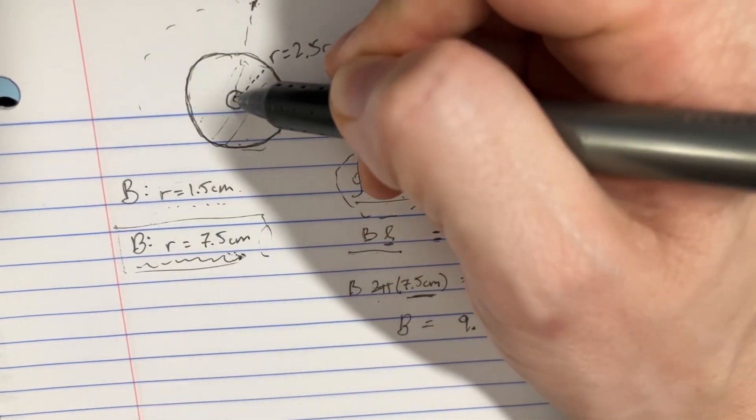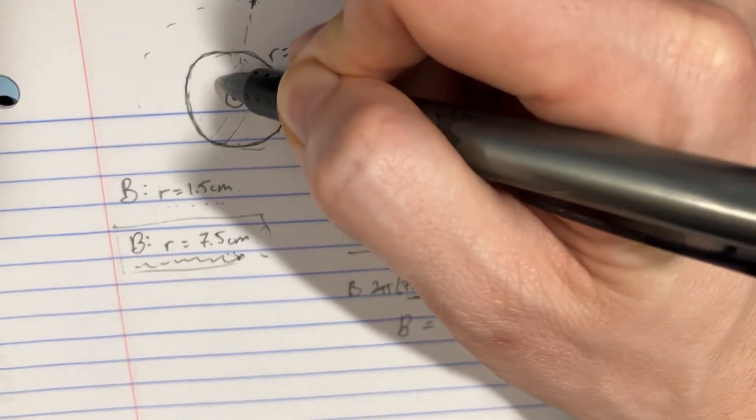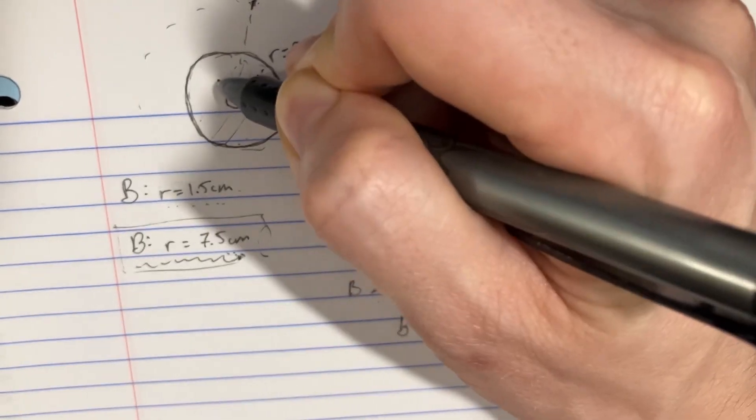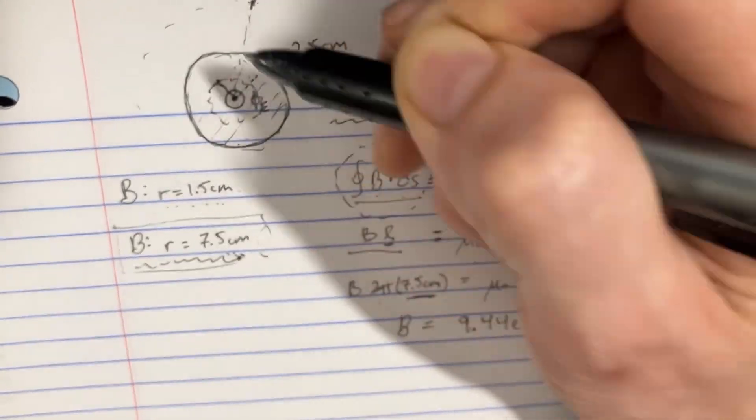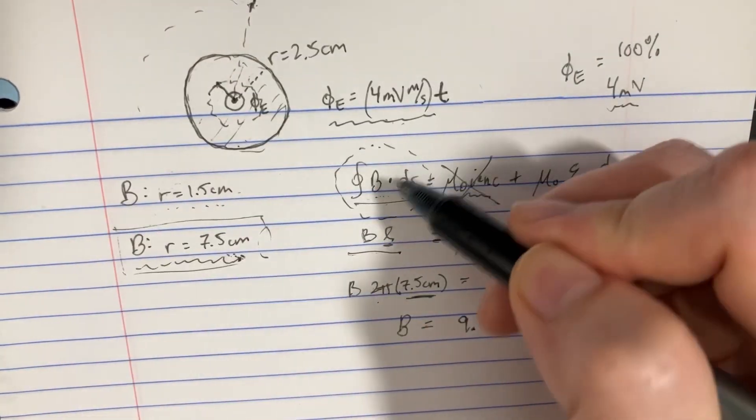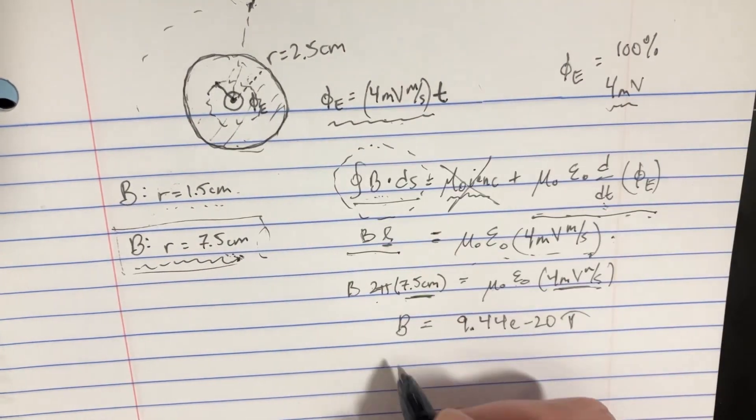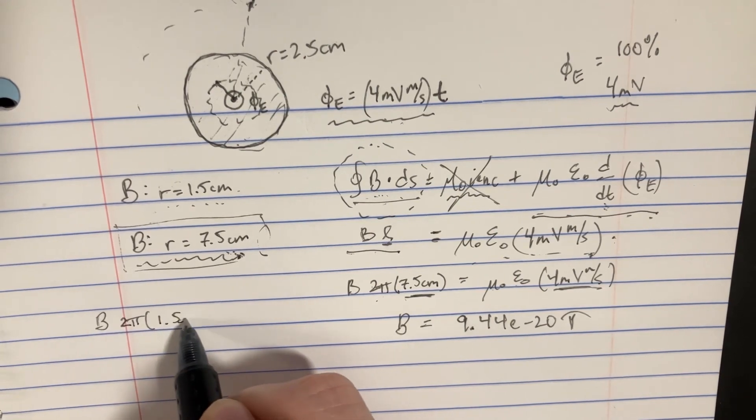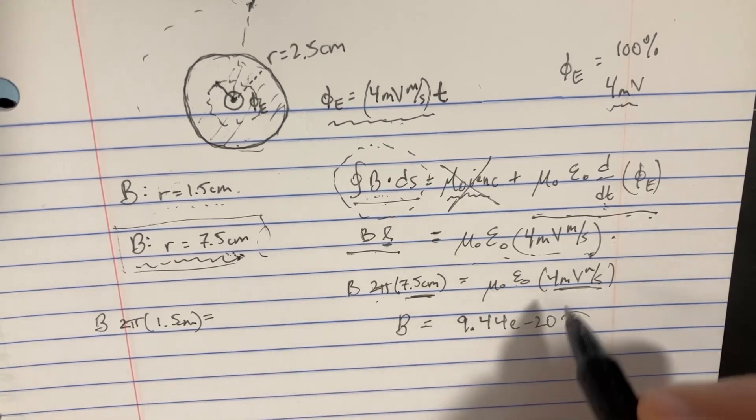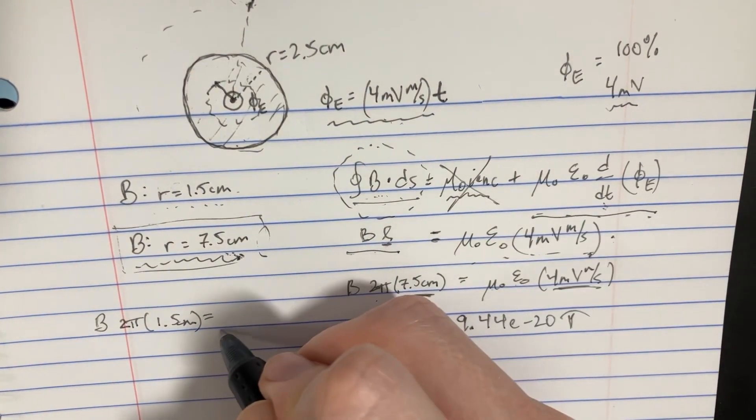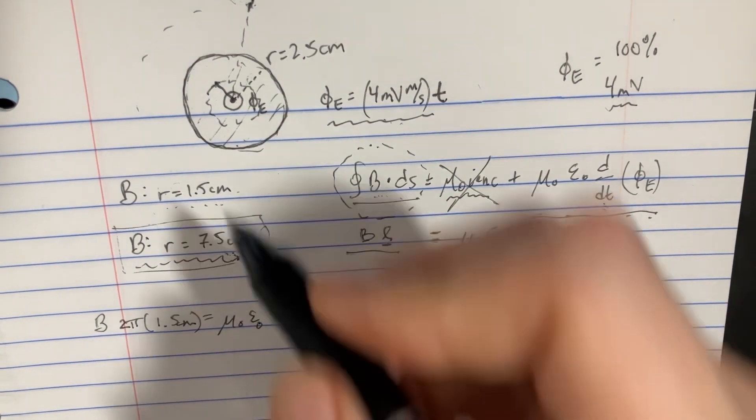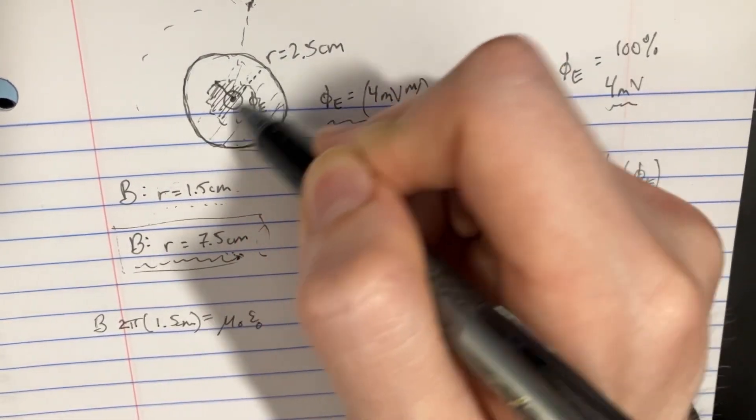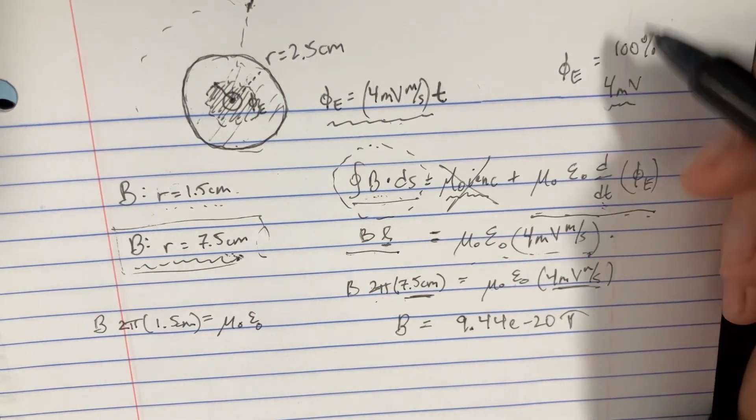r is 1.5 centimeters. So that means that we're going to be more like in here somewhere, which means that the length of this loop on the outside is going to be smaller. So we'll basically have B times 2 pi times 1.5 centimeters. And on the other side, we're just going to use this, but it's no longer 100% of the flux.